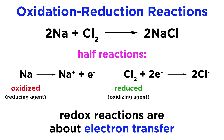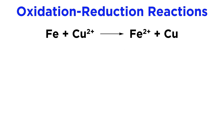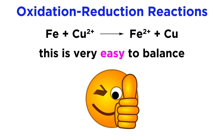We know that redox reactions are reactions in which electron transfer occurs. One substance is oxidized, which means it loses electrons, and another substance is reduced, meaning it gains electrons, which will occur when these electrons are transferred from one substance to another. Sometimes redox reactions are very simple, where a neutral metal atom is oxidized to become a metal cation when it transfers electrons to some other metal cation to form a different neutral metal. These reactions are easy to balance because we simply need to make sure that the charges are balanced by adding electrons and coefficients if necessary.